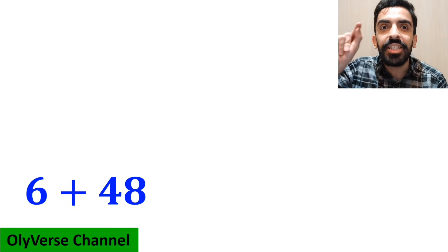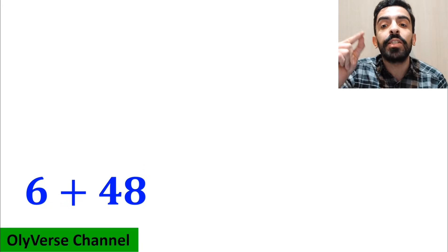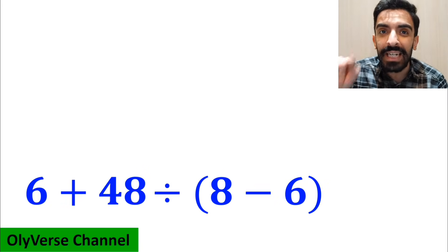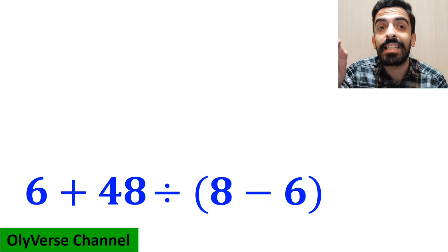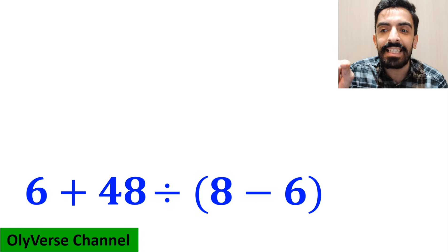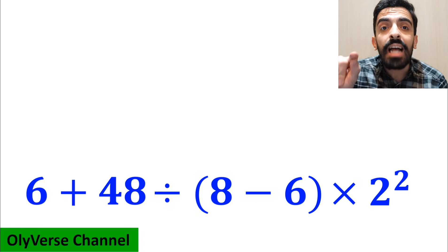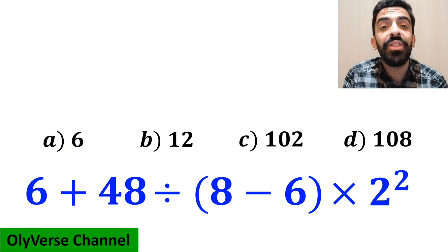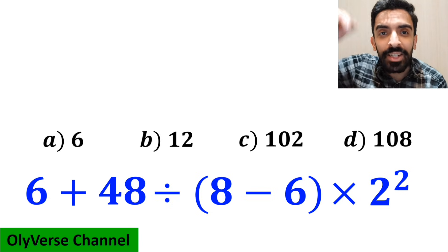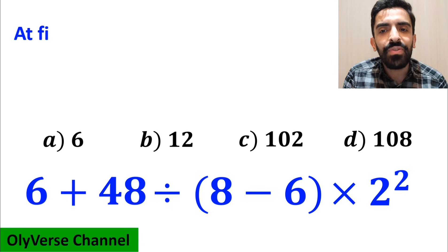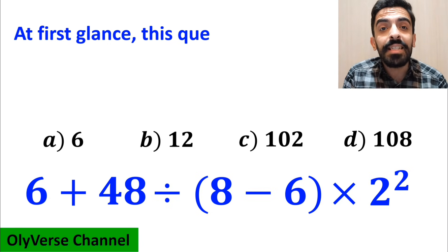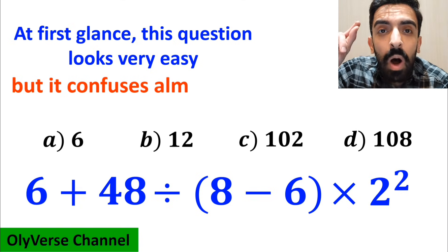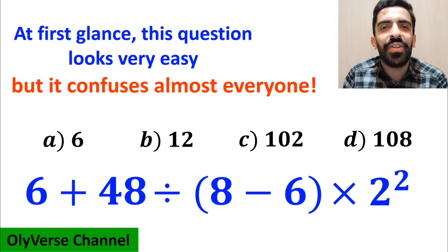What is the value of the expression 6 plus 48 divided by open parenthesis 8 minus 6 close parenthesis, then times 2 to the power of 2? Which option do you think is the correct answer to this question? At first glance this question looks very easy, but it confuses almost everyone.